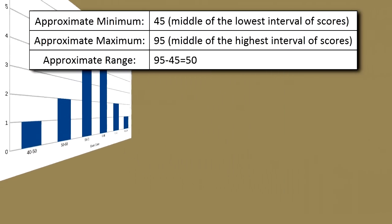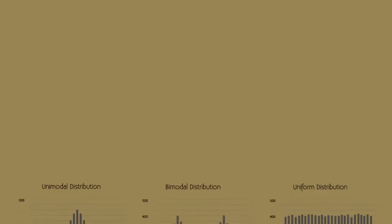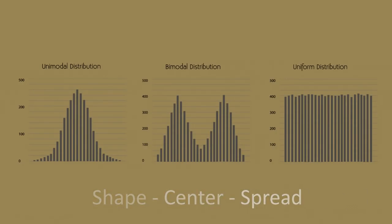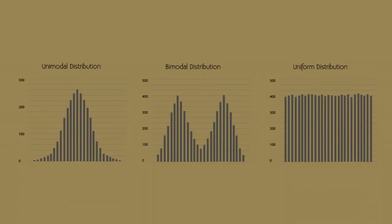The overall pattern of the distribution of a quantitative variable is described by its shape, center, and spread. By inspecting the histogram we can describe the shape, but we can only get a rough estimate of center and spread. In order to fully describe the distribution, we need precise numerical descriptions of both center and spread.